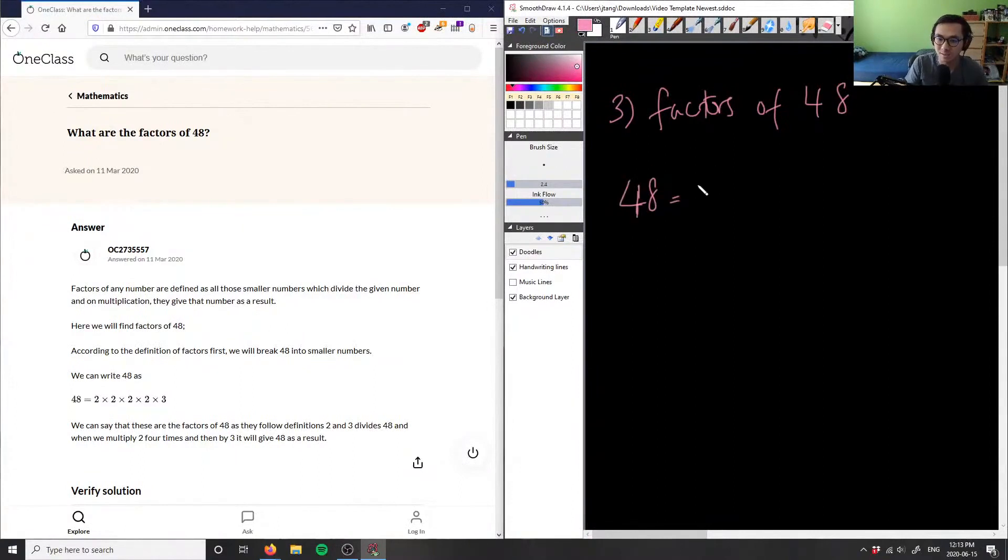Which means I know that 2 must be divisible, must be a factor of 48. So I can take out a 2. And then what I can do is I can divide 48 by 2 and 48 divided by 2 is equal to 24.